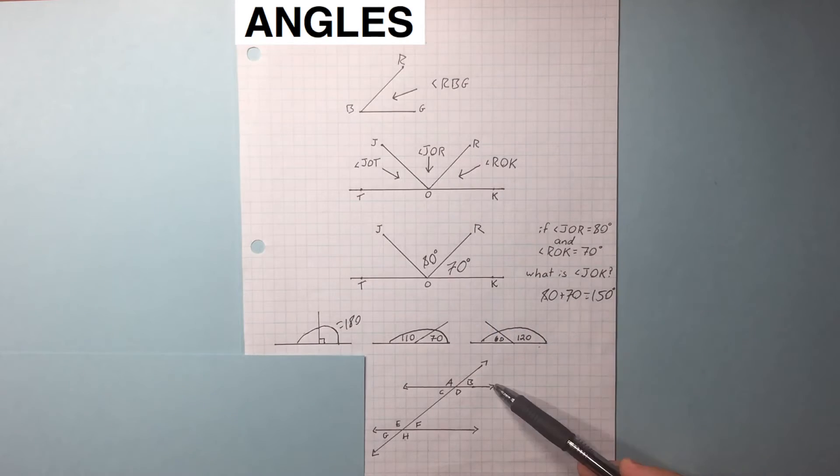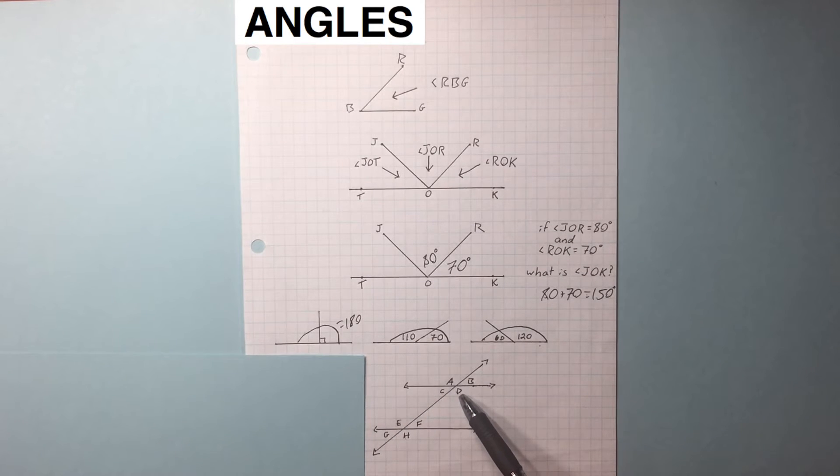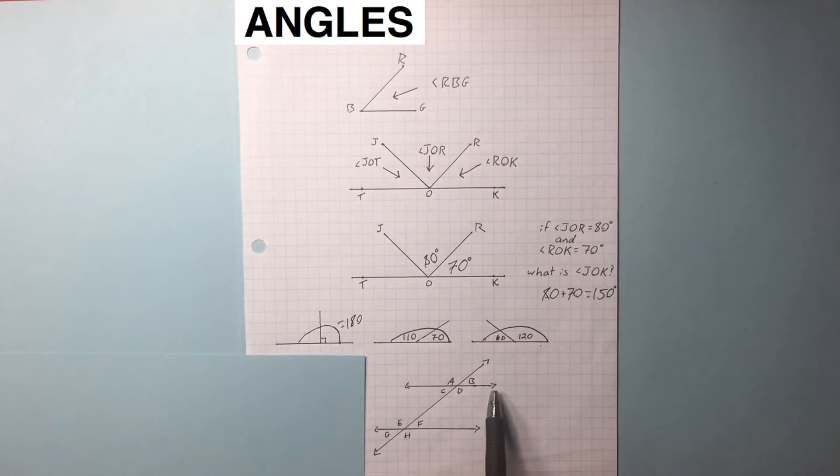Parallel lines. This and this are parallel, and this is a straight line. Because A is opposite of D, A and D are the same angle measurements. And because this line here is parallel to this line here, A equals D, A equals E, A also equals H.